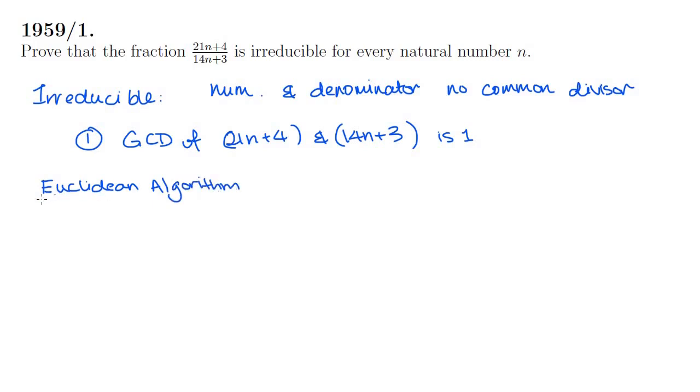The algorithm works like follows. We want to write the larger expression as a multiple of the smaller expression, which here is 14n plus 3, and some remainder. So here, 14n plus 3 goes into 21n plus 4 only once, and the remainder is going to be 7n plus 1. So that's our first step.